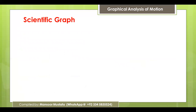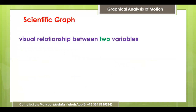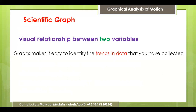Scientific graphs are the visual relationship between two variables. Previously, we might have two variables in numeric or tabular form. You should also have a pictorial view — that is possible by drawing a scientific graph, which shows the relationship between two quantities. These graphs make it easy to identify the trend in data that you have collected.